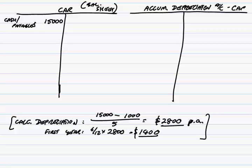We write 'car' against it, because in practice you may have machines and buildings as well, so there'd be another Accumulated Depreciation account for each. The car has a debit balance of 15,000; we'll credit this account with 1,400. On the balance sheet, we can effectively put the two together — a debit of 15,000 less a credit of 1,400 — which will give us the correct net value.